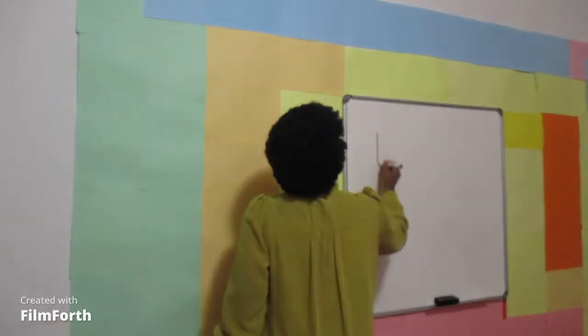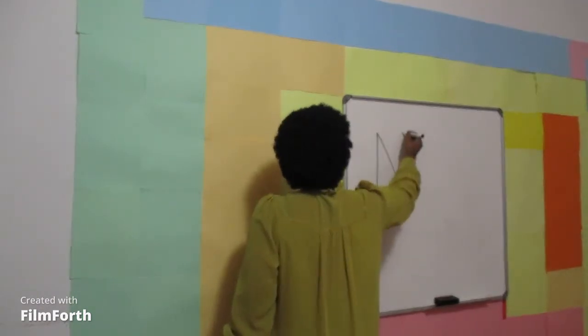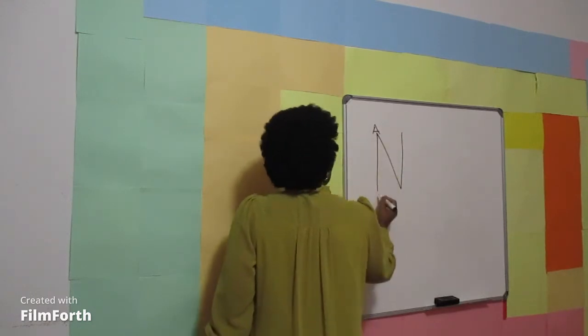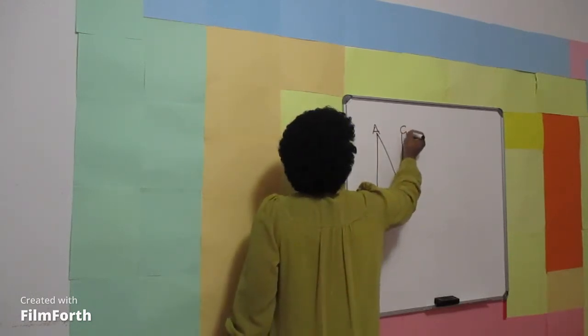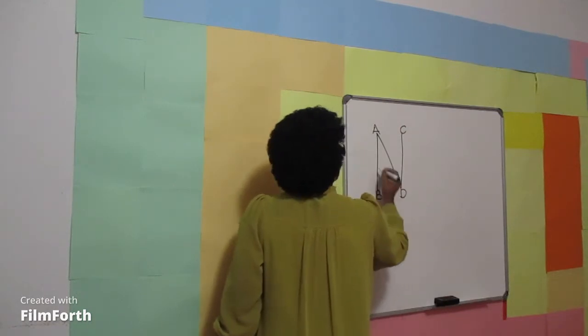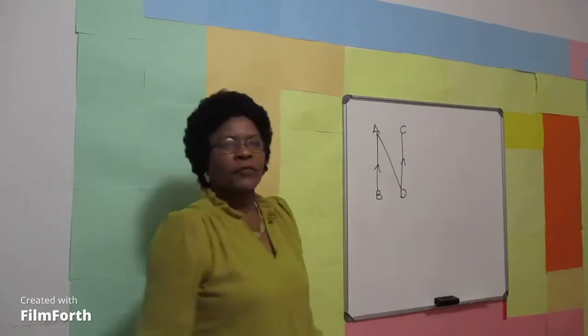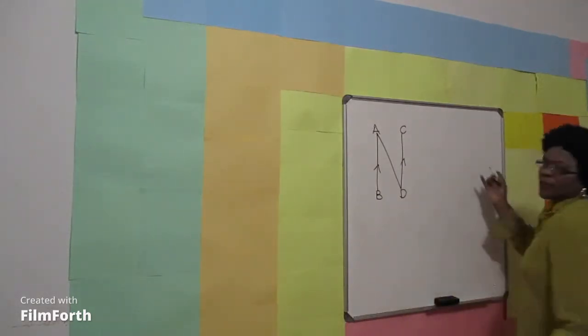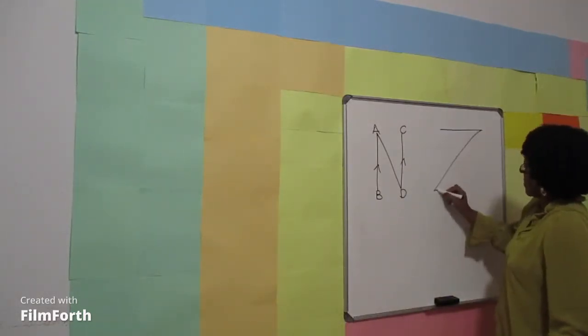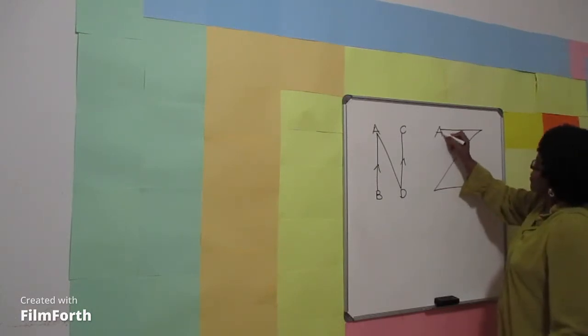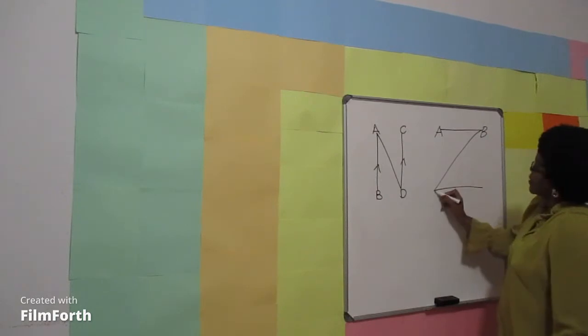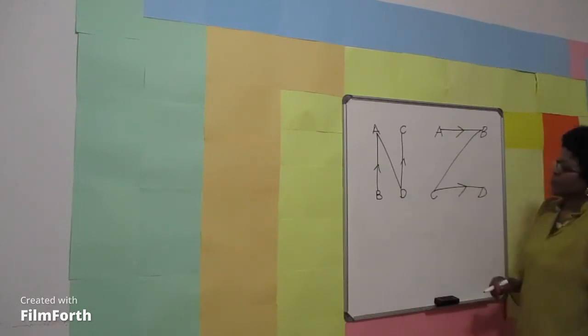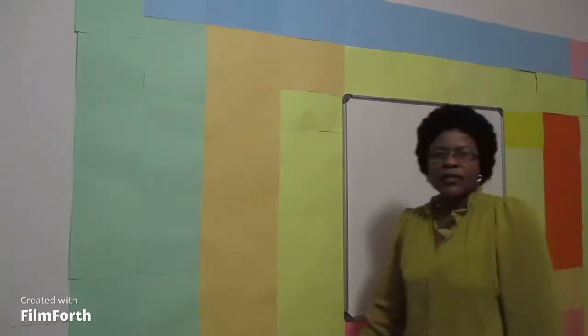Let me draw an N shape: AB is parallel to CD. Let me draw a Z shape: AB is parallel to CD. Let's look at N shape and Z shape and see where alternate angles are.